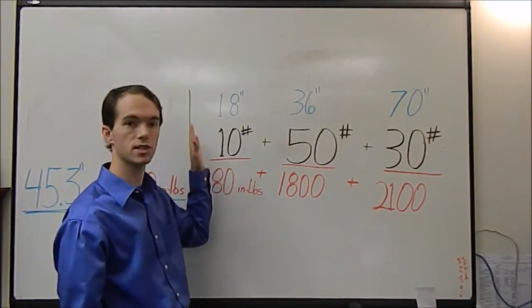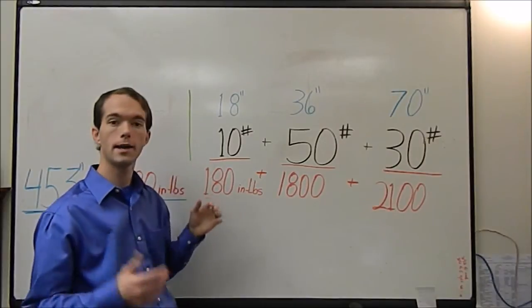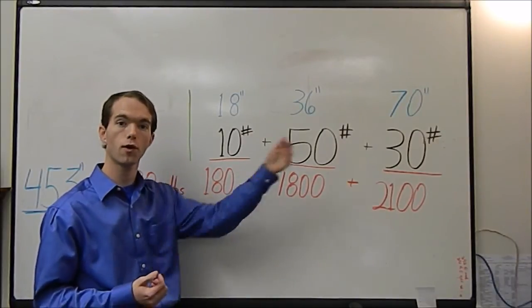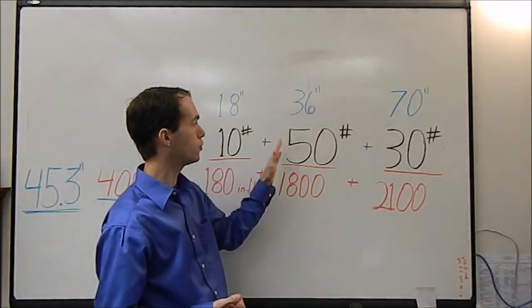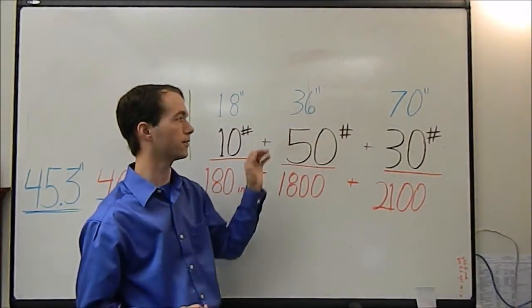Something 10 pounds is sitting 18 inches away from wherever you decide to measure from. Now for my boats I typically measure from the very tip of the bow. So we've got 10 pounds 18 inches back, then you've got 50 pounds 36 inches back.